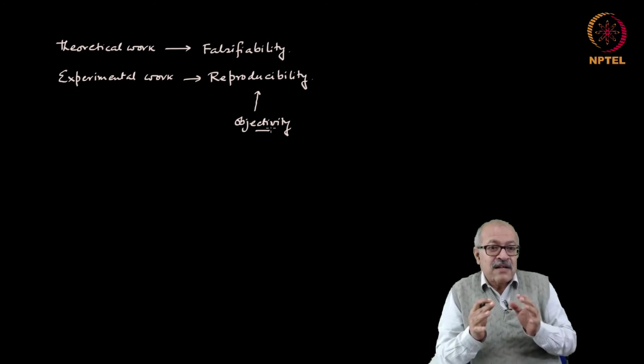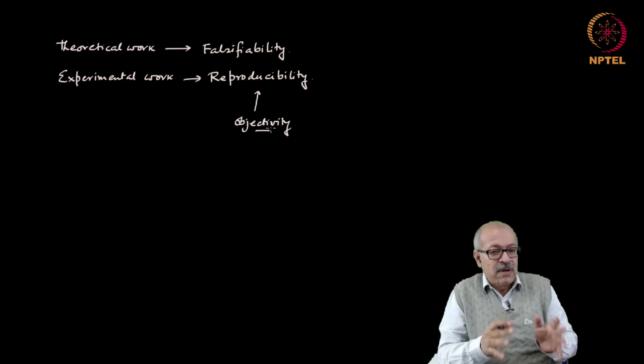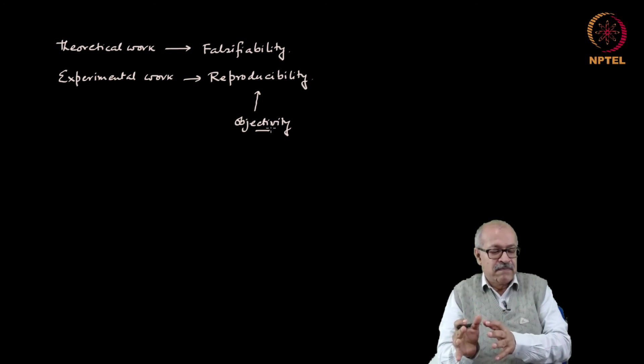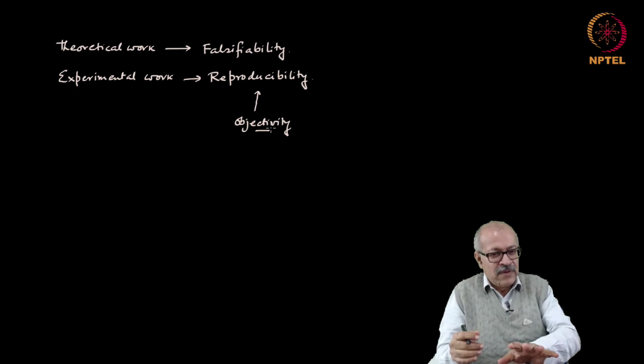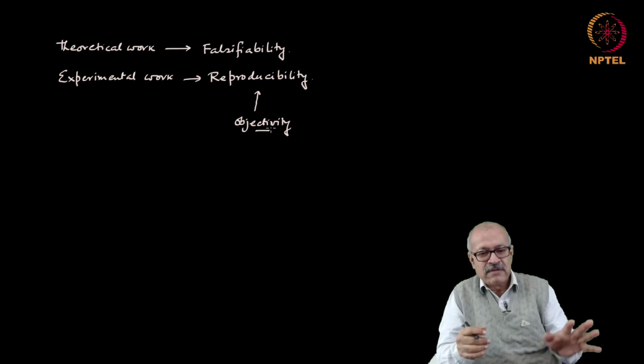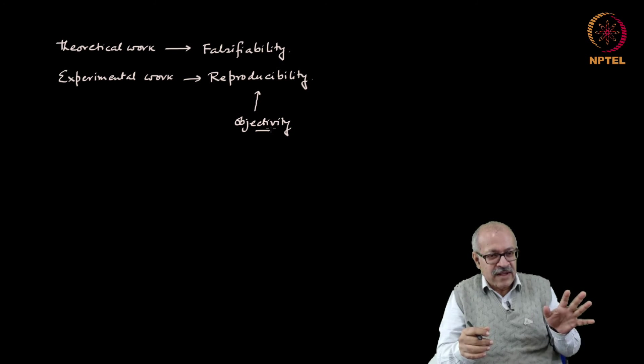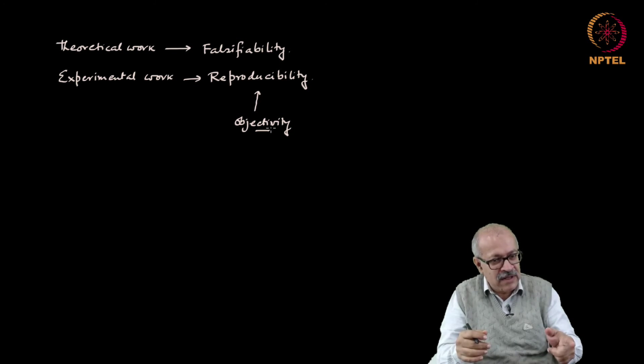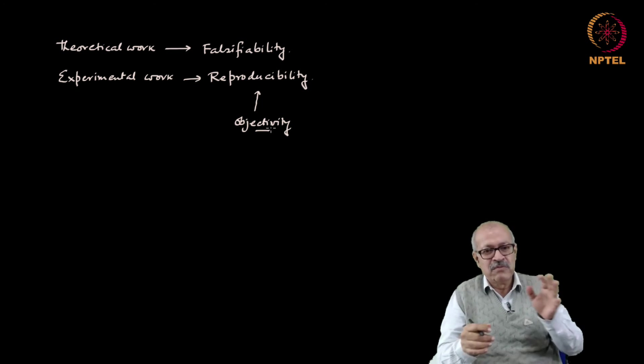So we understand that the demand of theoretical work is falsifiability, the demand of experimental work is reproducibility. Without these two conditions being satisfied, you cannot publish a paper. A theorist has to worry about falsifiability and an experimentalist has to worry about reproducibility.